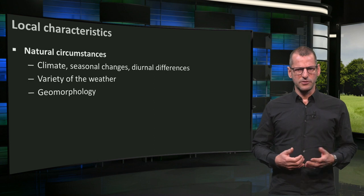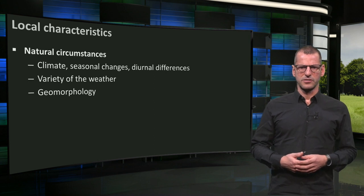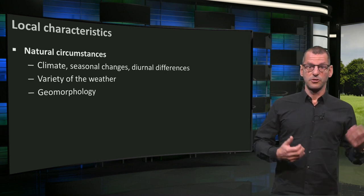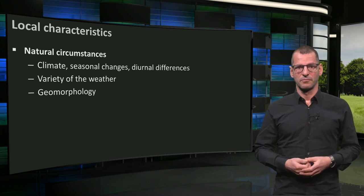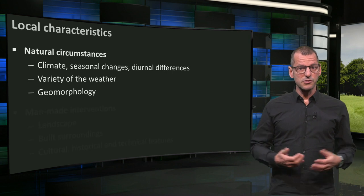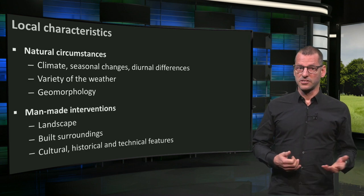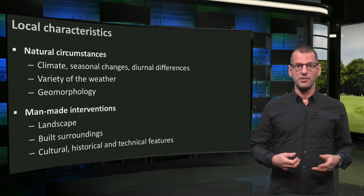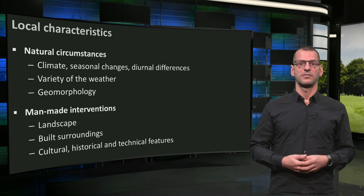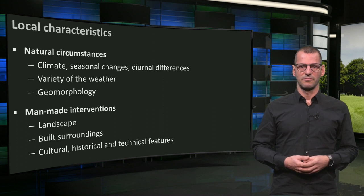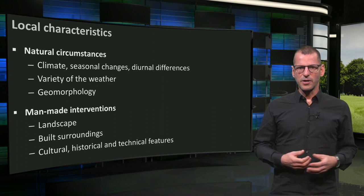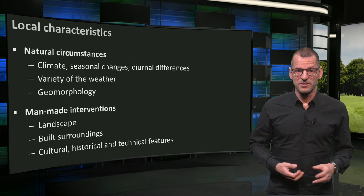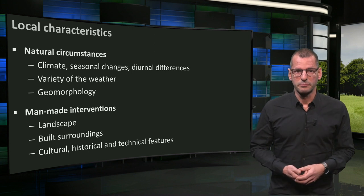Local characteristics can be related to natural circumstances — the climate, weather, and geomorphology. But they can also refer to man-made interventions, such as the landscape, built surroundings, and features of various kinds. Let's look at these man-made interventions first and see if they are planned in a sustainable way.